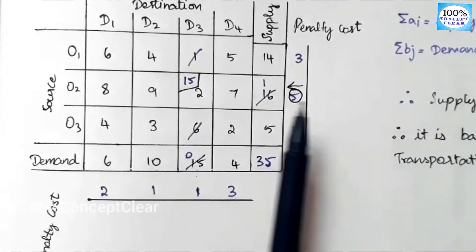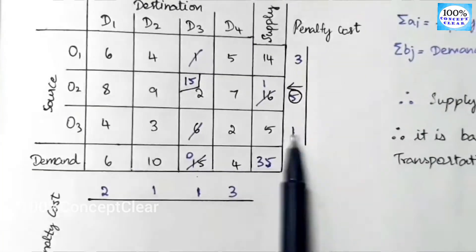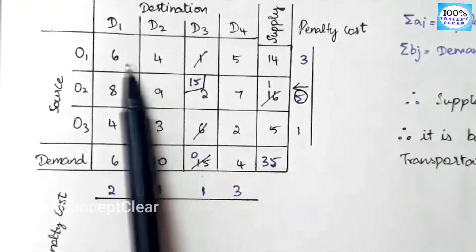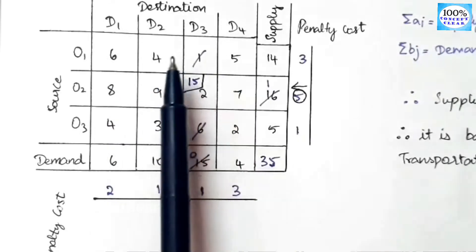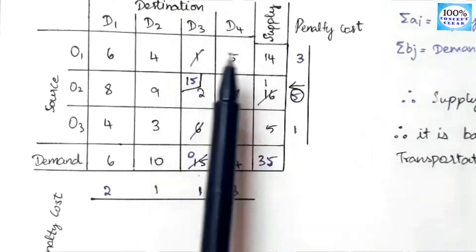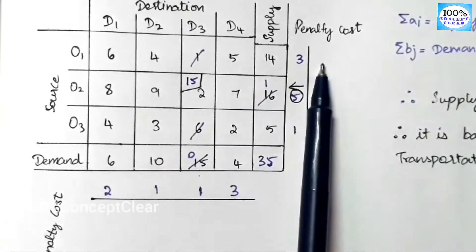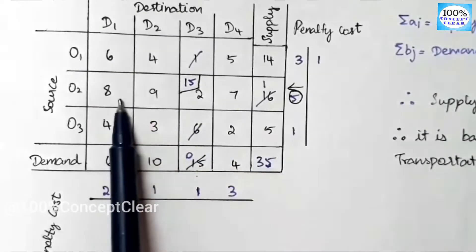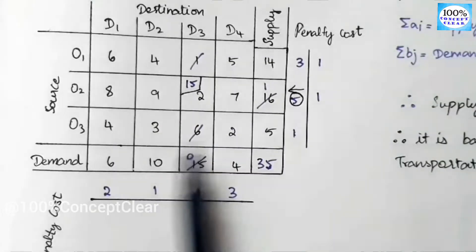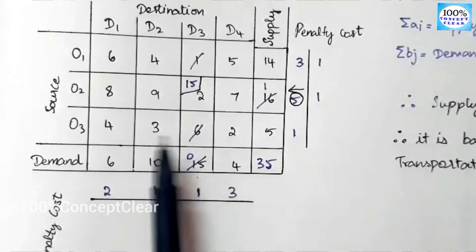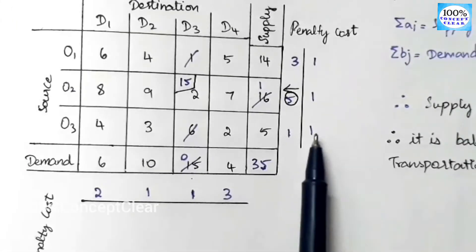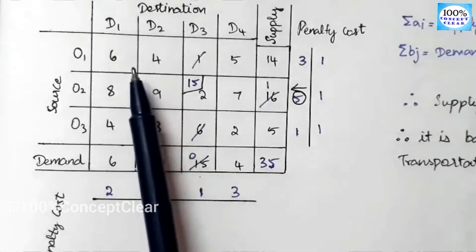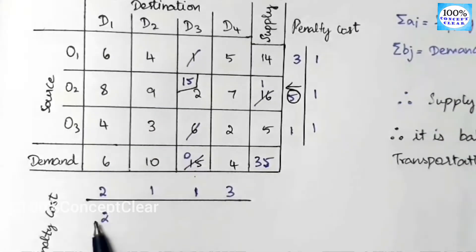Now we do the second allocation. We recalculate the penalty costs. Row 1: values 6, 4, 5 — two least values are 4 and 5, so 5−4 = 1. Row 2: values 8, 9, 7 — least values 7 and 8, so 8−7 = 1. Row 3: least values 2 and 3, so 3−2 = 1. Column D1: values 6, 8, 4 — least values 4 and 6, so 6−4 = 2.